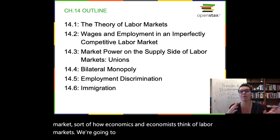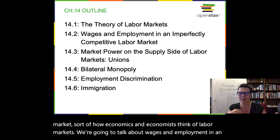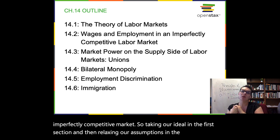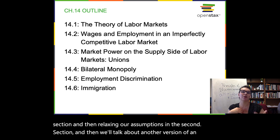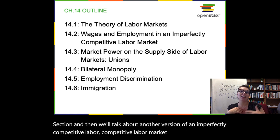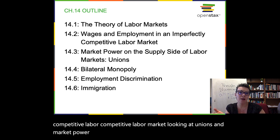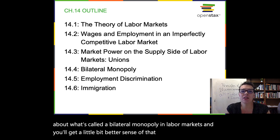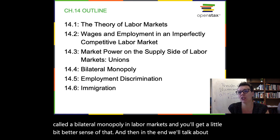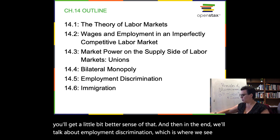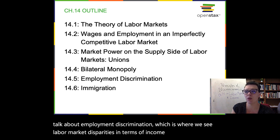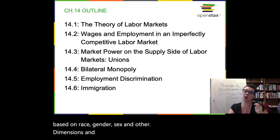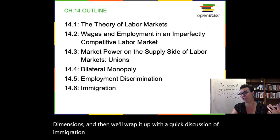We're going to talk about wages and employment in an imperfectly competitive market — taking our ideal in the first section and then relaxing our assumptions in the second section. Then we'll talk about another version of an imperfectly competitive labor market looking at unions and market power on the supply side, bilateral monopoly, employment discrimination — where we see labor market disparities based on race, gender, sex, and other dimensions — and finally a quick discussion of how immigration affects labor markets.